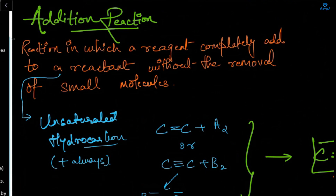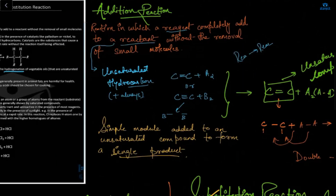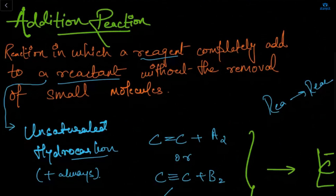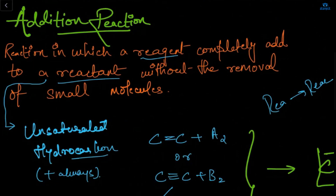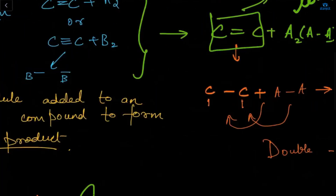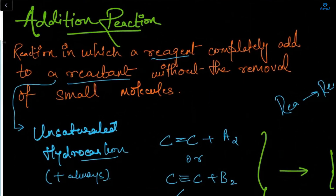What is addition reaction? The definition: a reaction in which a reagent is completely added to a reactant without the removal of small molecules. Now the first very important difference between addition and substitution reaction is that addition reaction is basically unsaturated type and substitution reaction is basically saturated type.